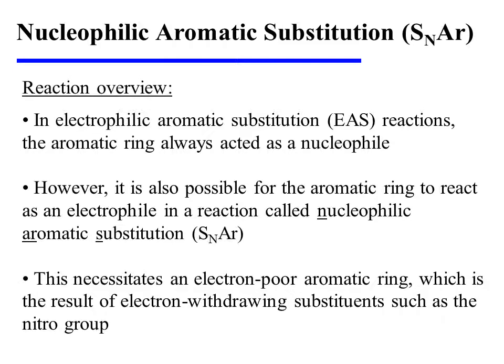In electrophilic aromatic substitution, or EAS reactions, the aromatic ring always acted as a nucleophile. However, it is also possible for the aromatic ring to react as an electrophile in a reaction called nucleophilic aromatic substitution, or SNAr. But this necessitates an electron-poor aromatic ring, which is the result of having electron-withdrawing substituents, such as the nitro group.